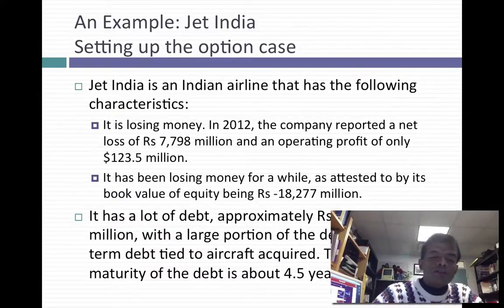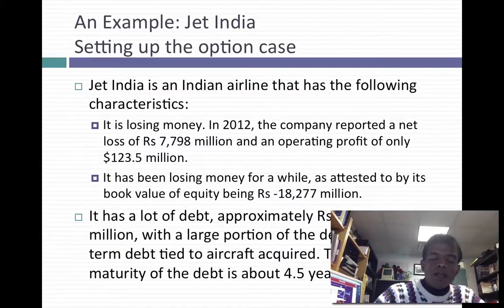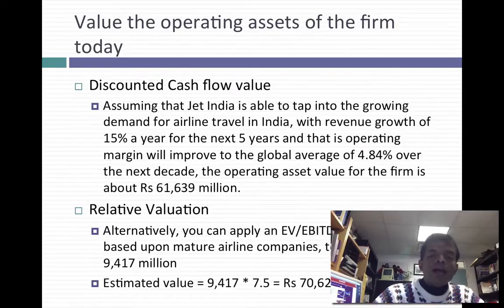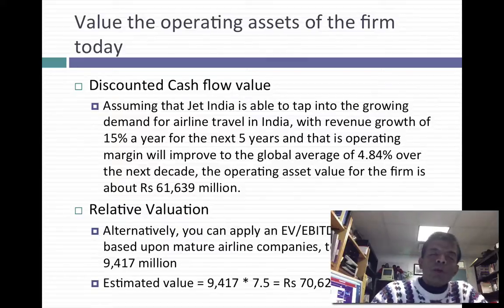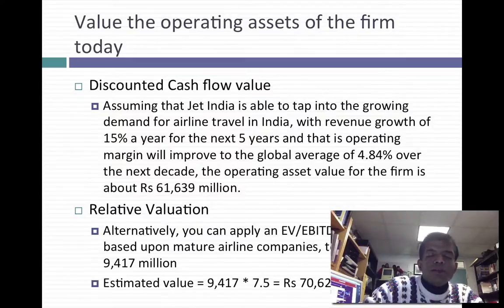In theory I should be taking a weighted duration of the debt, but I didn't have enough information on the exact coupon payment schedule, so I'm using maturity as if it were duration. So I've got a money-losing company with a lot of long-term debt — I have the ingredients for arguing for a liquidation option. There are two key inputs I need: a value for the assets of the company, and I'll do a traditional discounted cash flow valuation. The value I got using that approach is ₹61,639 million.